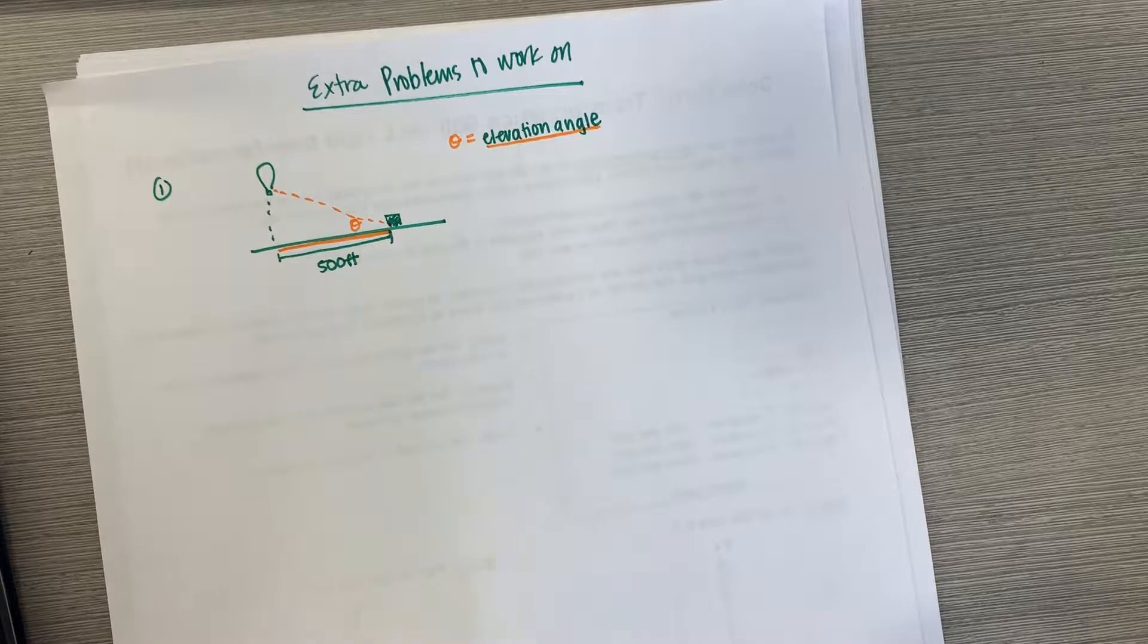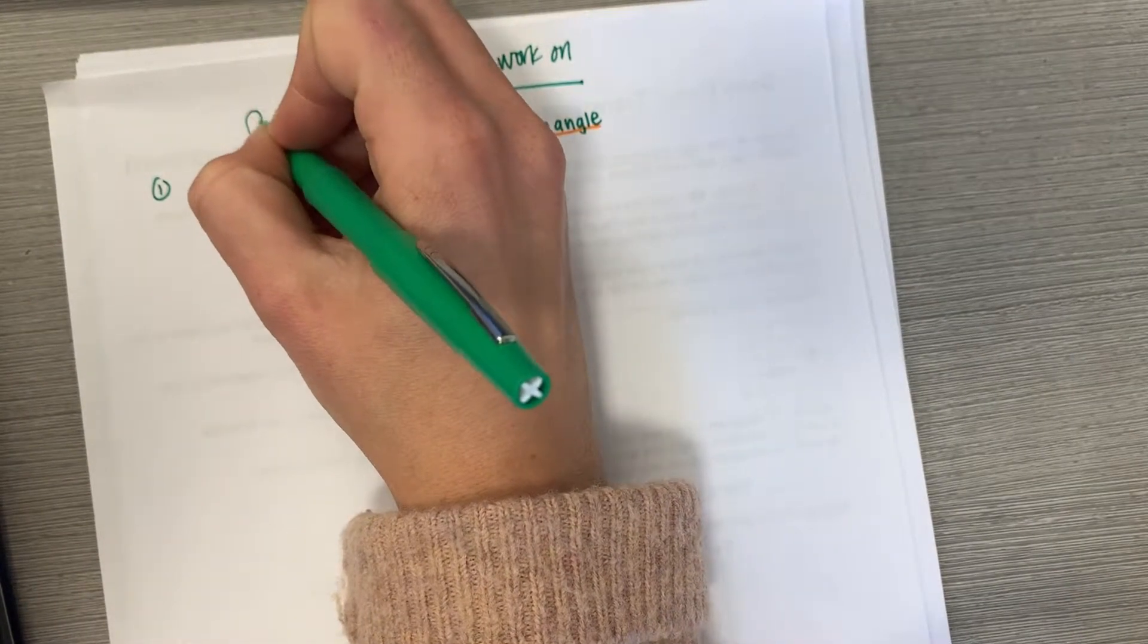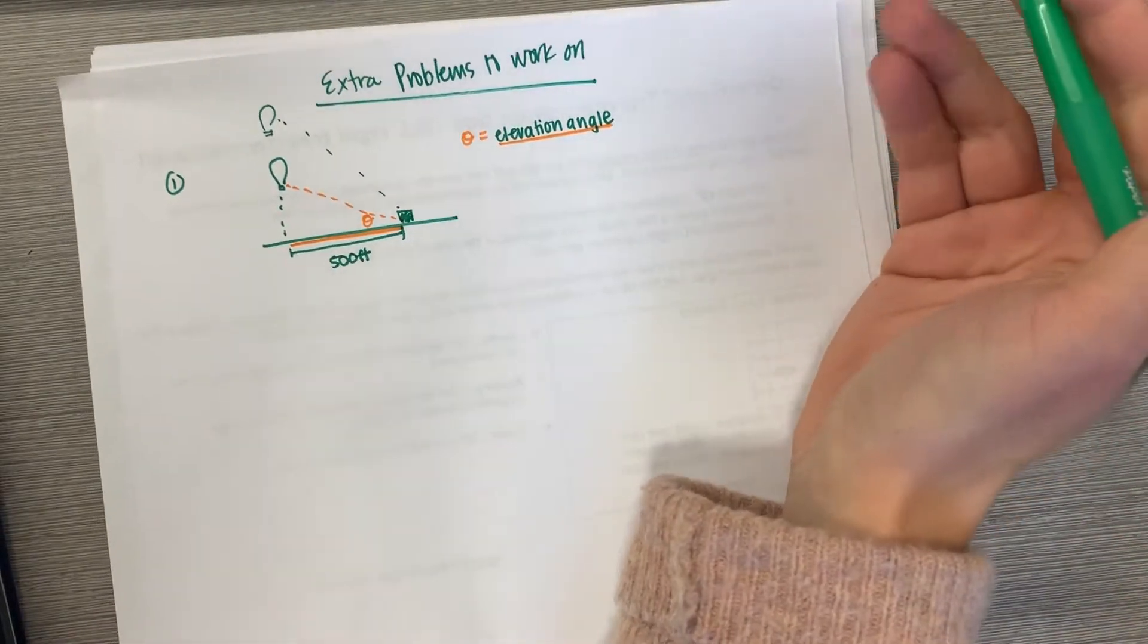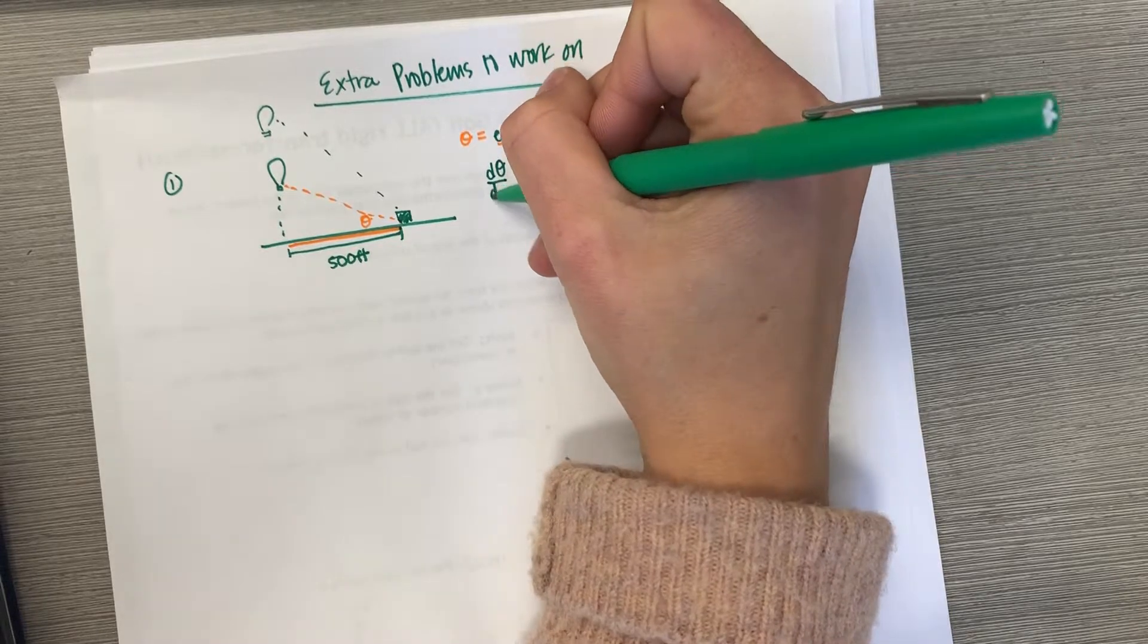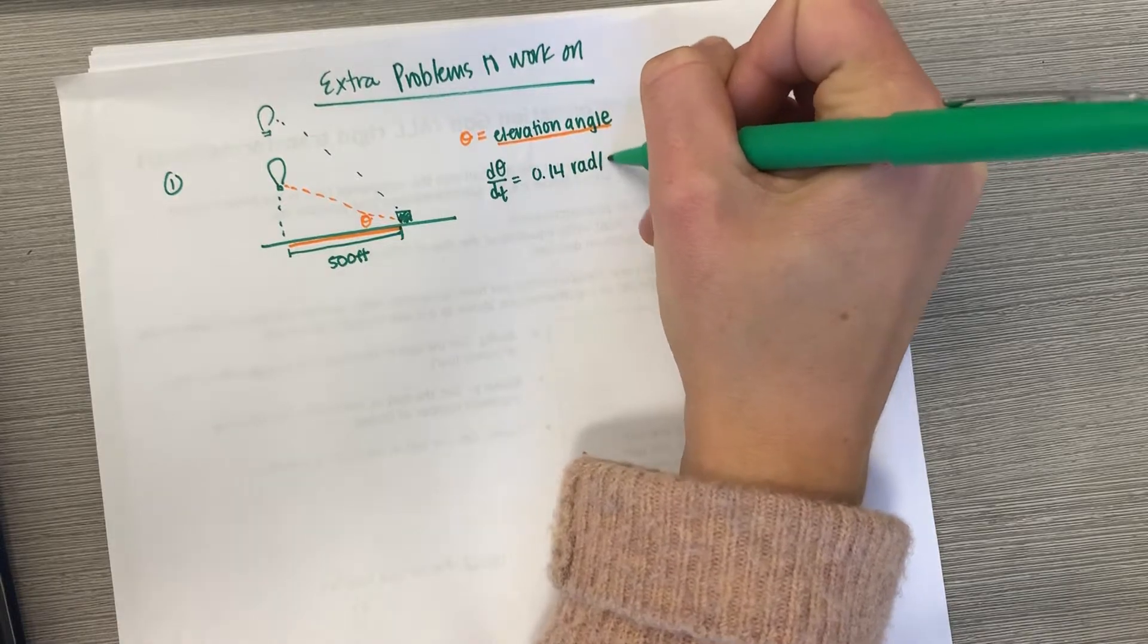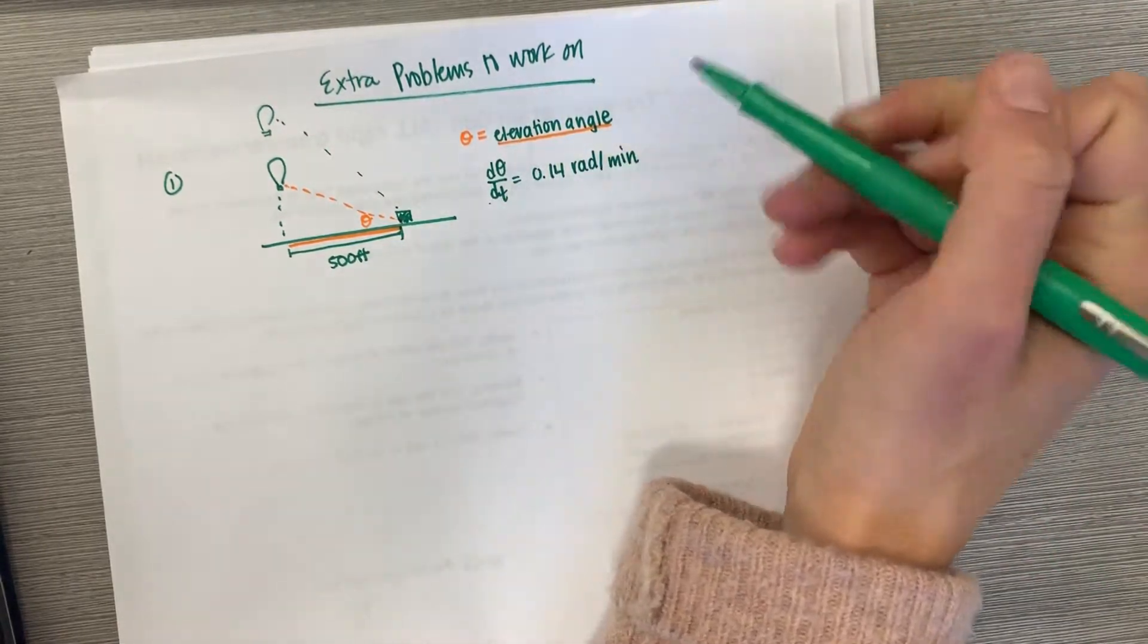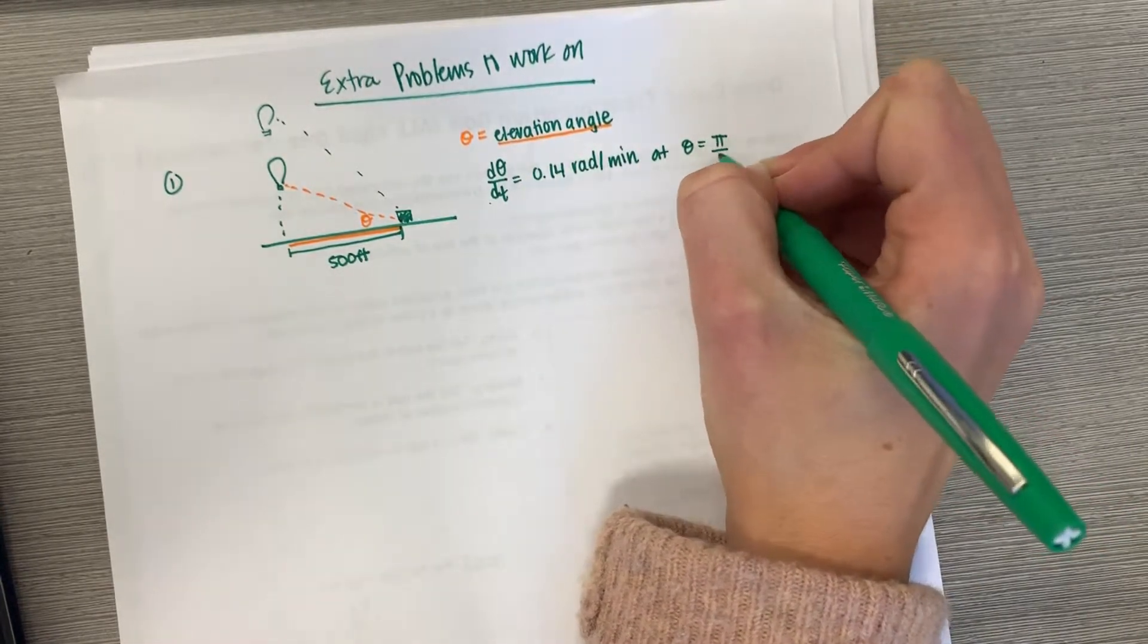So at the moment the rangefinder's elevation angle is pi fourths. The angle is increasing because as the hot air balloon goes up in the sky we've got a larger angle at a rate of 0.14 radians per minute. We do know we are with respect to time since it's per minute at theta equals pi fourths.